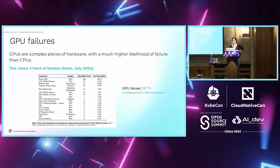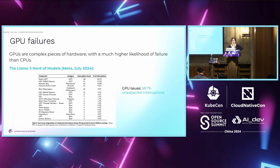GPUs are very complex pieces of hardware and they're much more likely to have failures than CPUs. This table is from the LLaMA 3 paper published by Meta last month. They listed all unexpected interruptions that happened during the 54-day period of the LLaMA 3 model pre-training. Out of all unexpected interruptions, 58.7% were due to GPU issues — so it's a really important problem that's critical to tackle well.